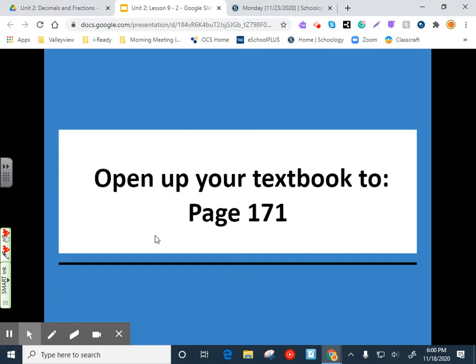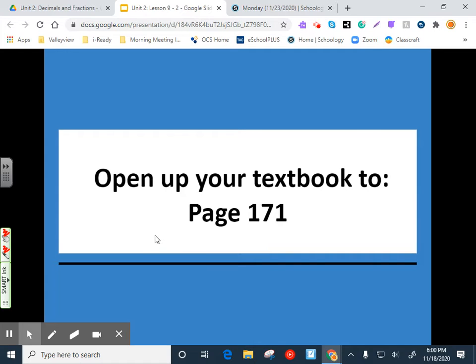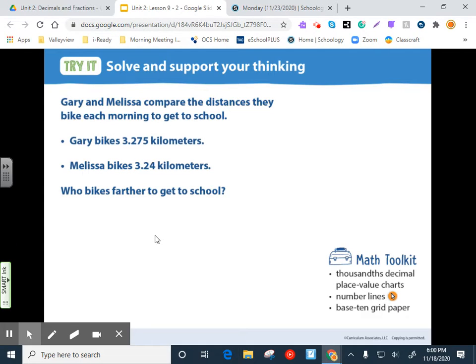Okay. If you could turn to page 171, we'll get started. Gary and Melissa compare the distances they bike each morning to get to school. Gary bikes 3 and 275 thousandths kilometers. Melissa bikes 3 and 24 hundredths kilometers. Who bikes farther to get to school?